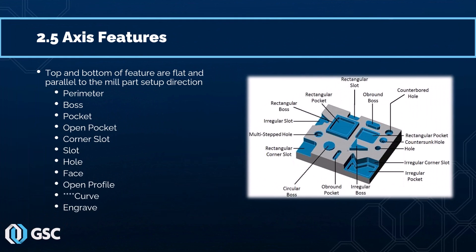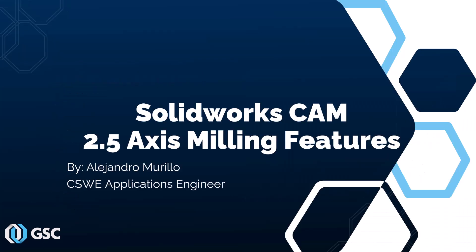That concludes our presentation. As you saw, it is very easy to define two-and-a-half axis milling machinable features in SOLIDWORKS CAM — you simply have to know the different types and what their purpose is. If you are interested in additional content relating to SOLIDWORKS CAM or any other SOLIDWORKS product, feel free to visit us at gsc-3d.com. This has been Alejandro with GSC. Thanks for watching.